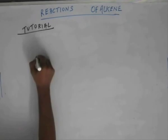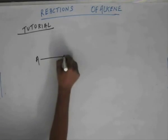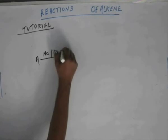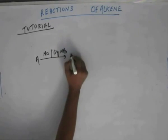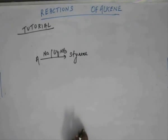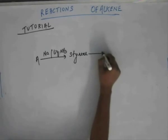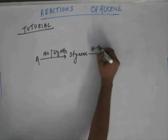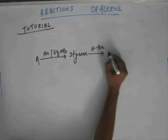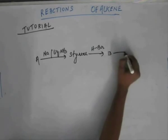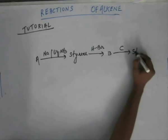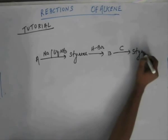Suppose I have A and I added sodium and liquid ammonia, so I got styrene. On styrene, I added HBr to get me B. On this B, I added C and that got me styrene back.